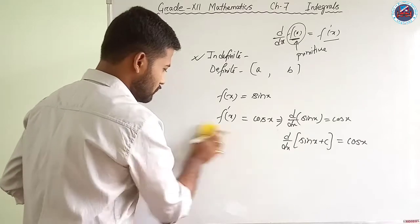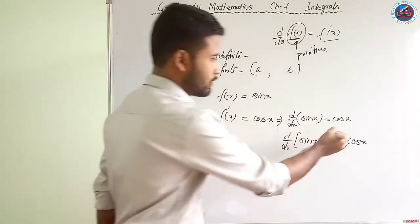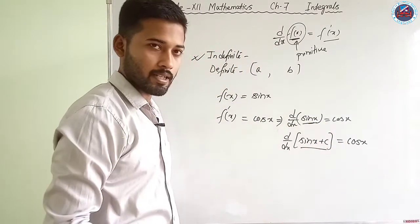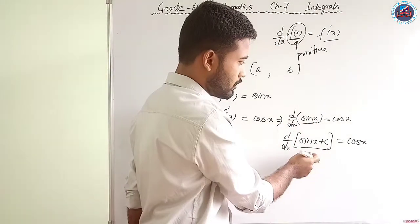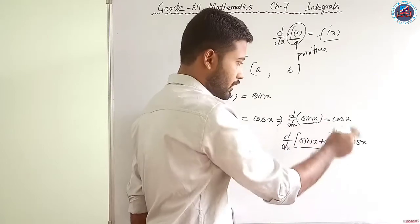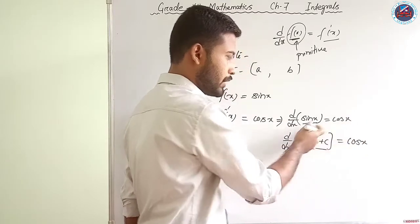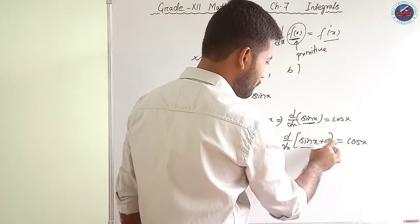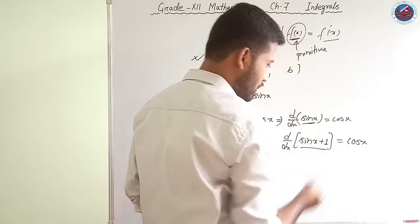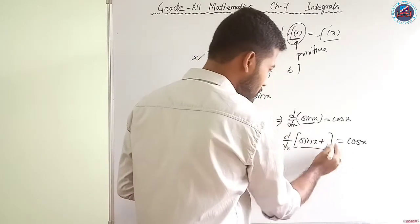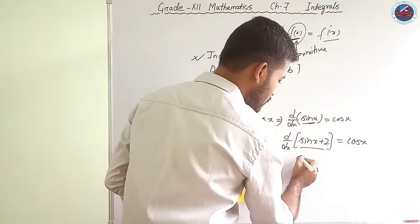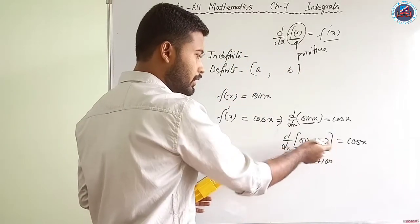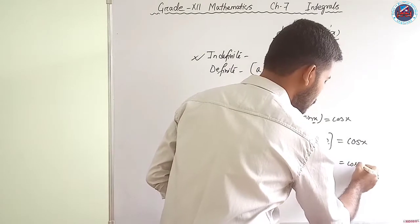So both sin x and sin x + c are anti-derivatives of cos x. One thing is clear: two functions may have the same derivative, but a particular derivative may not have a unique anti-derivative. We can have sin x + 1, sin x + 2, sin x + 100 — infinitely many functions whose derivative is cos x.